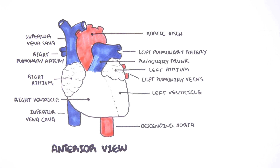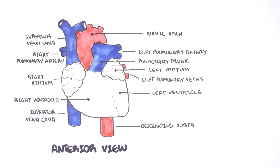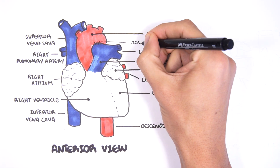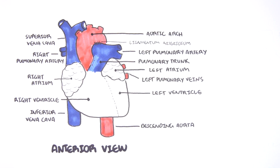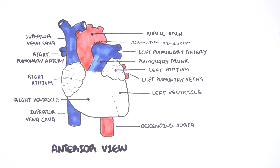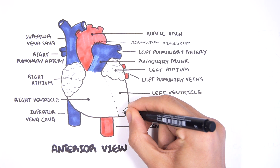There's a ligament here that connects the aortic arch with the pulmonary trunk. This is the ligamentum arteriosum, which is a remnant of the patent ductus arteriosus. Here's the apex of the heart. That was the anterior view.